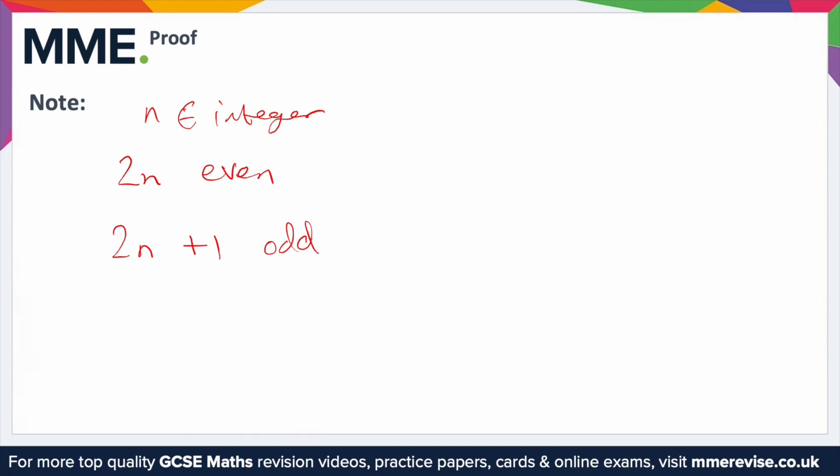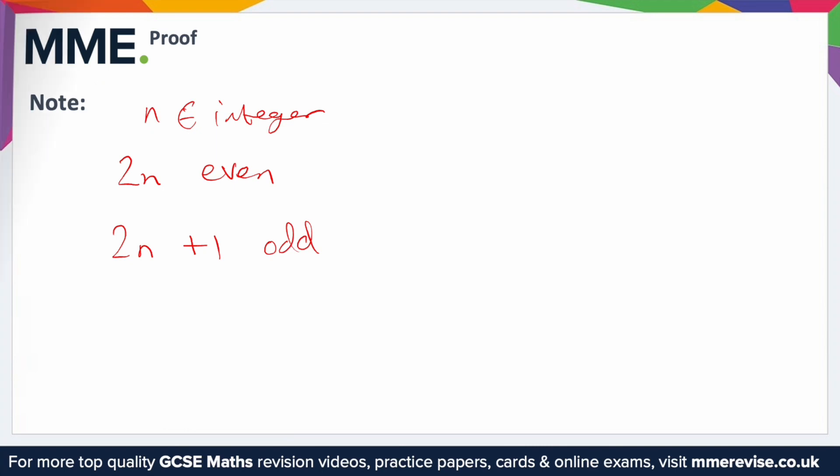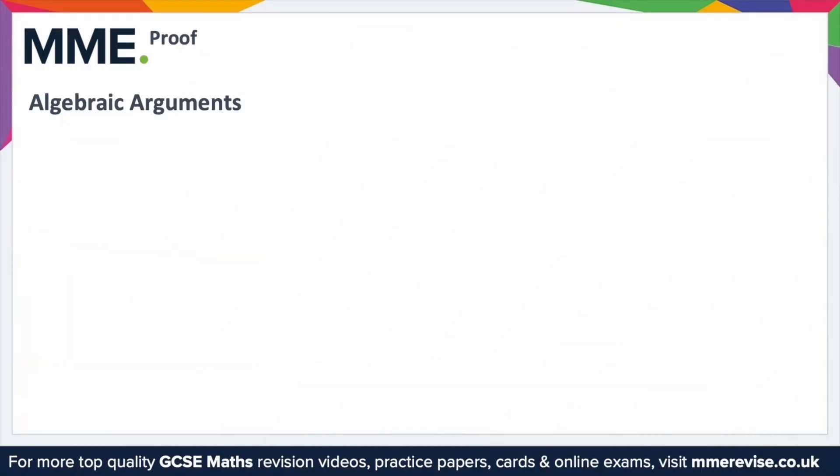When it comes to solving proof questions, factorising and expanding brackets can often help to identify rules, so please keep this in mind. We can use the odd and even properties outlined previously to prove or disprove rules or arguments. A good thing to remember is this little table.